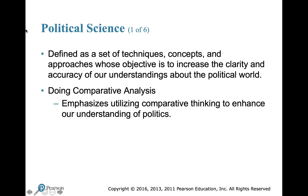Political science is defined as a set of techniques, concepts, and approaches whose objective is to increase the clarity and accuracy of our understanding about the political world. While related social sciences like history and economics mostly rely on facts, political science looks at why things happen — why people don't vote, why people join protest groups, why people boycott certain establishments. We try to understand why and develop something that assists us in understanding the world of politics.